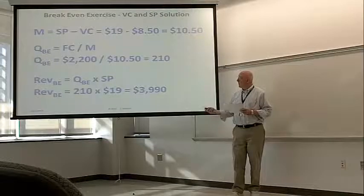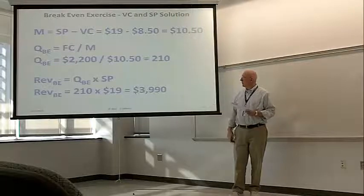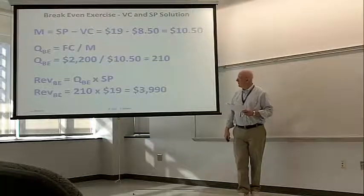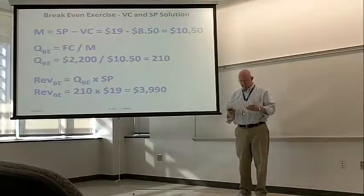Breakeven revenue, breakeven quantity times selling price, 210 times $19 or $3,990.